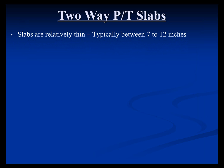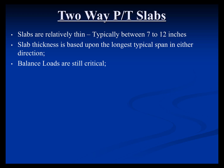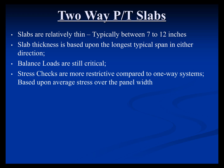Two-way PT slabs are typically relatively thin. One of the benefits of post-tensioning is that slab thickness is less than the rebar-only equivalent. For typical applications — apartments, hotels, parking — slabs are in the 7- to 12-inch range. Typically we don't go less than 7 inches for two-way flat plates. You could do a 5- or 6-inch two-way flat plate, but you'd need very tight column spacing, and if you can take columns out, everyone is usually a lot happier. The slab thickness is based on the longest typical span. Balance loads remain critical, much like they are in one-way systems and beams.